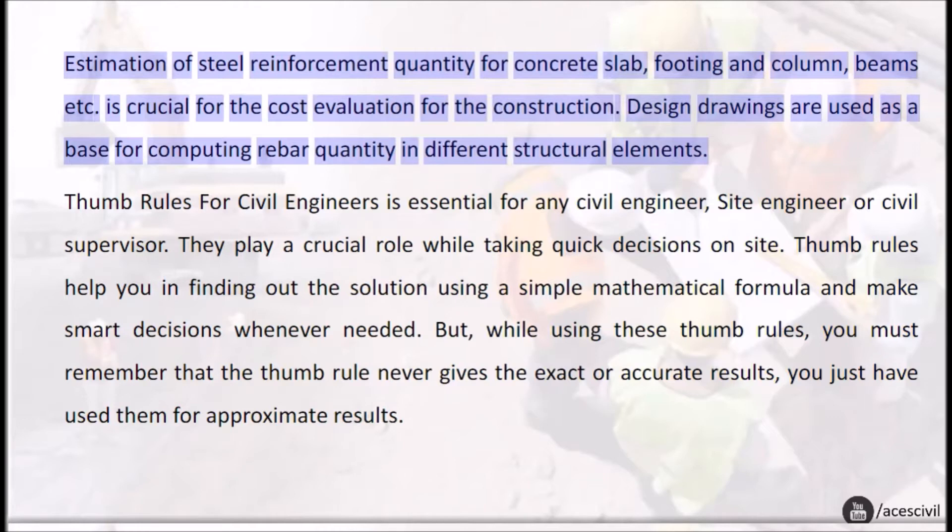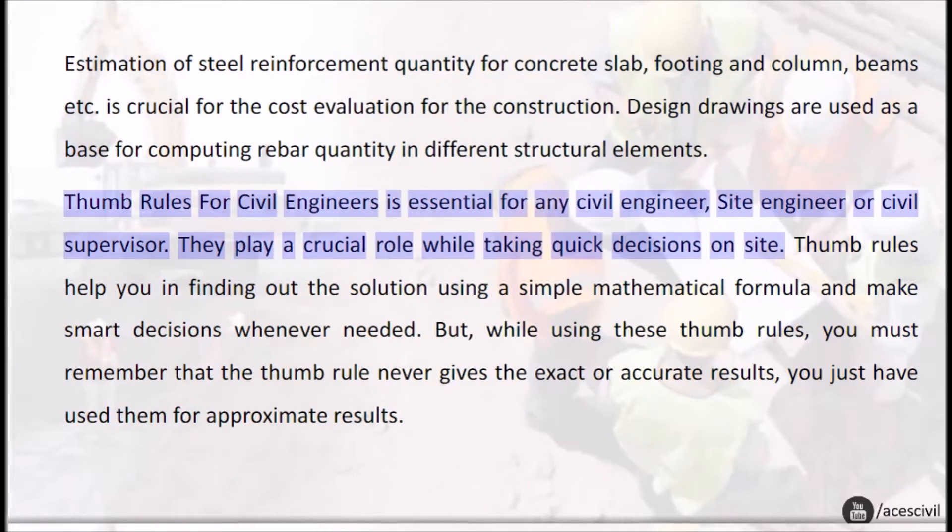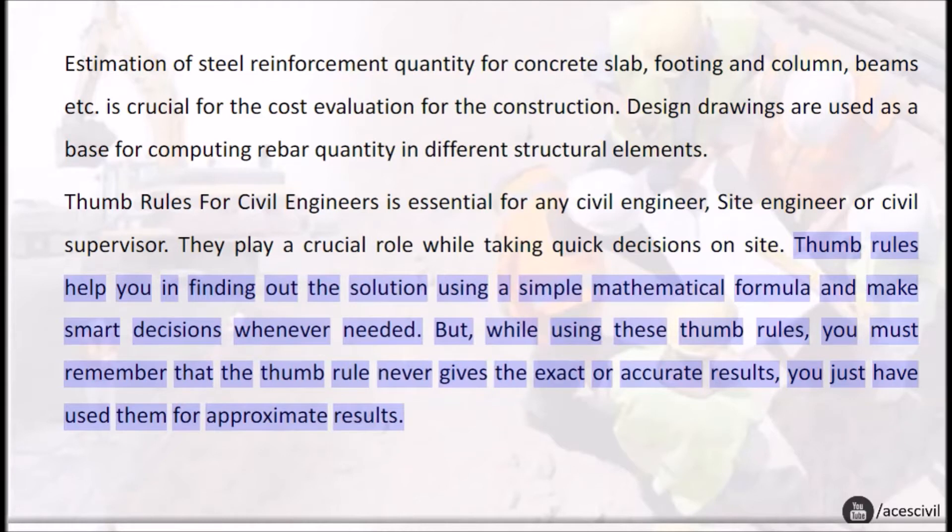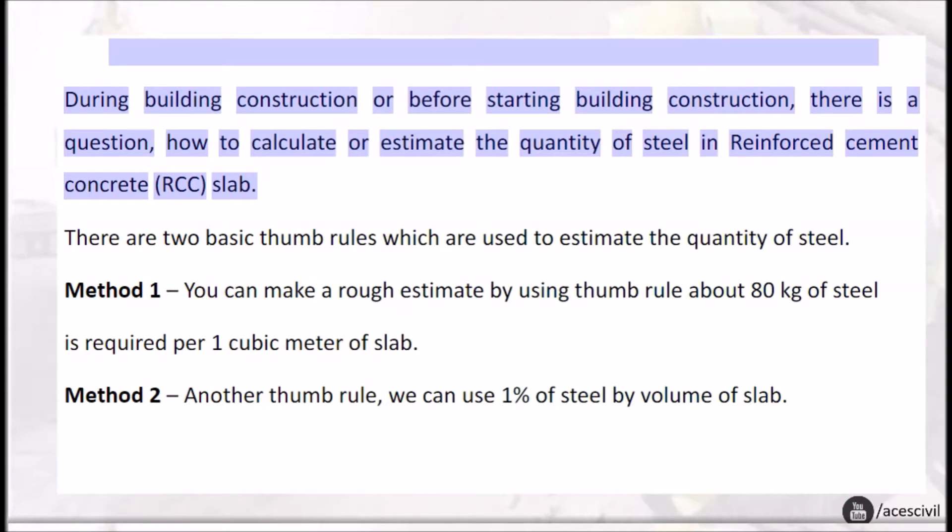Thumb rules for civil engineers is essential for any civil engineer, site engineer, or civil supervisor. They play a crucial role while taking quick decisions on site. Thumb rules help you in finding out the solution using a simple mathematical formula and make smart decisions whenever needed. But while using these thumb rules, you must remember that the thumb rule never gives the exact or accurate results. You just have used them for approximate results.